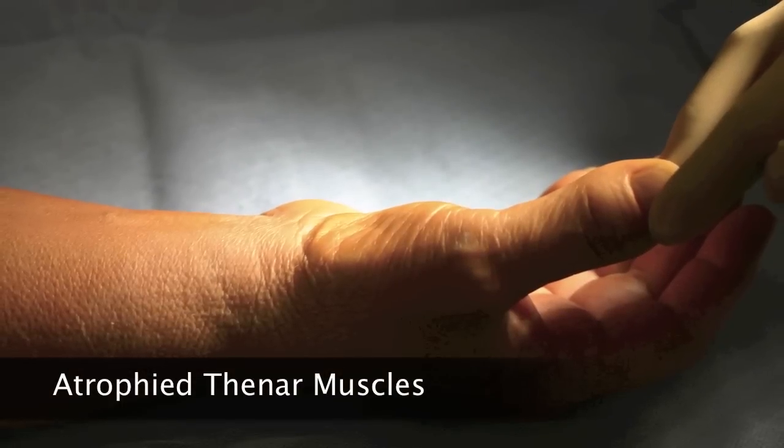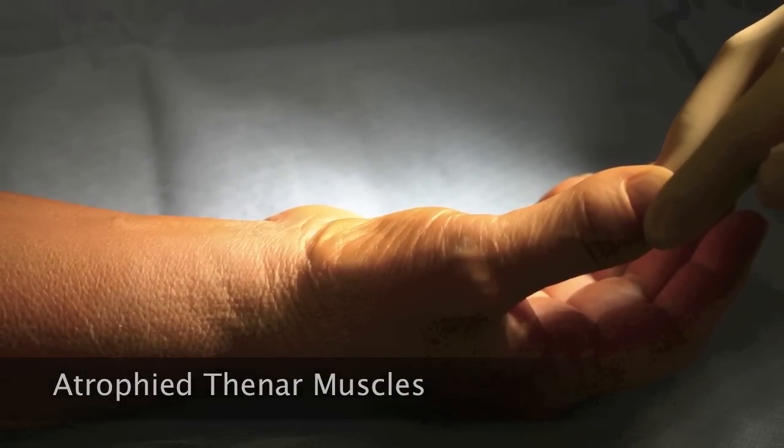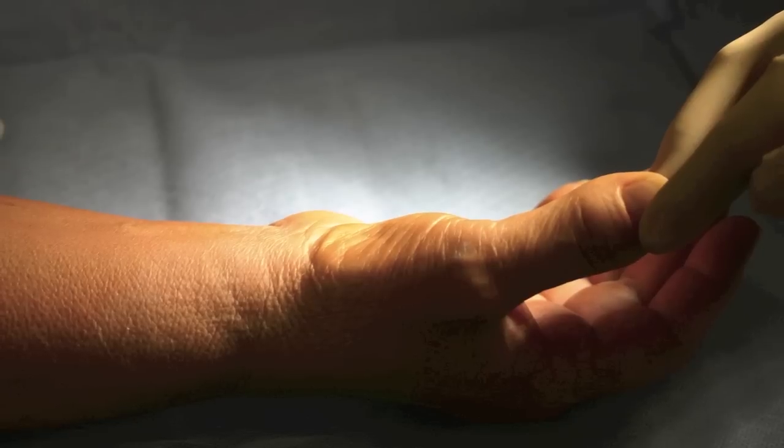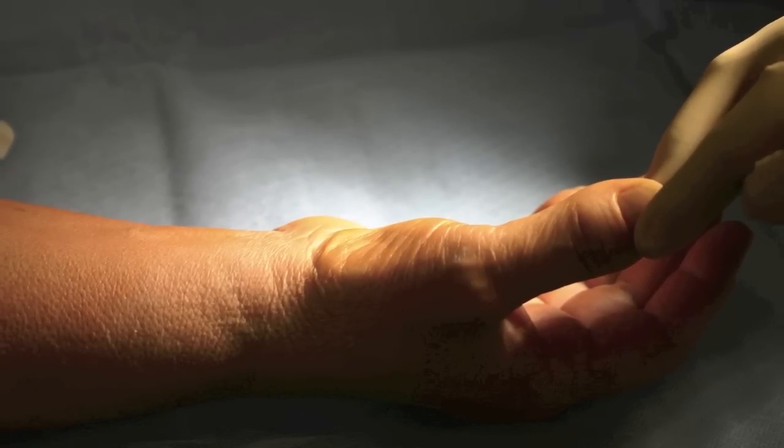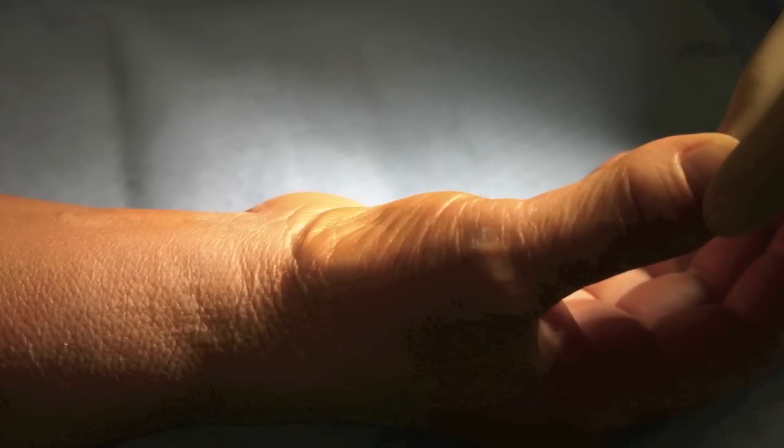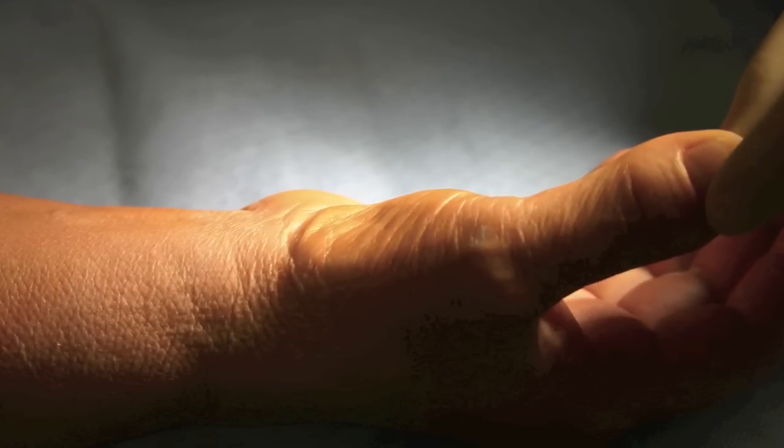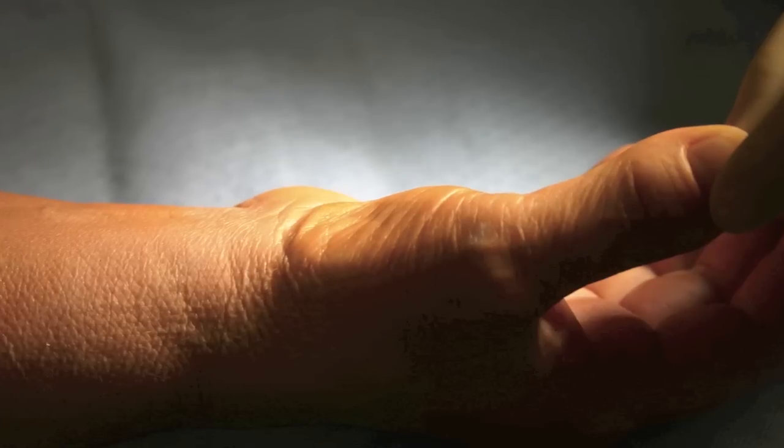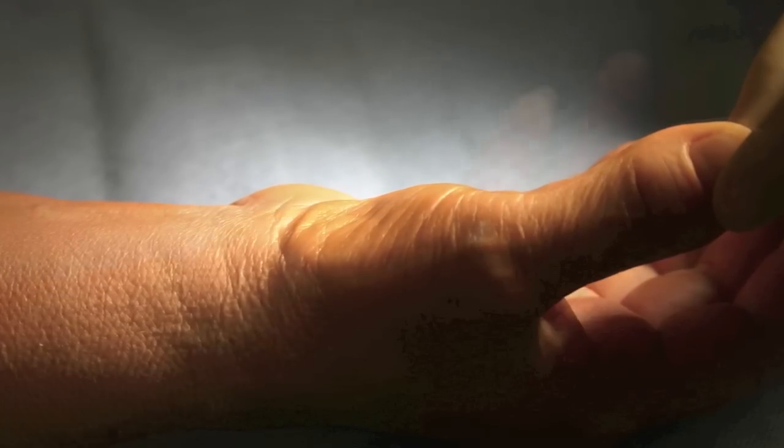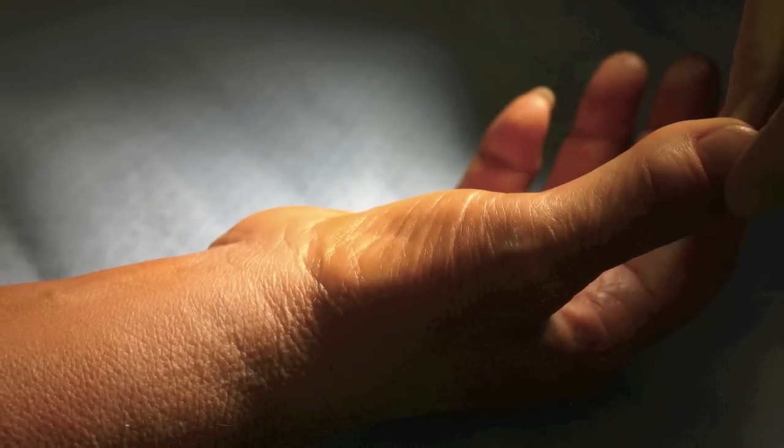These pictures show a thumb with muscle atrophy. This patient has had carpal tunnel for so long that the nerves supplying the muscles have been permanently damaged and the muscle has wasted away. You can see the large divot or depression in the contour of the thumb base that happens after muscle atrophy takes place.